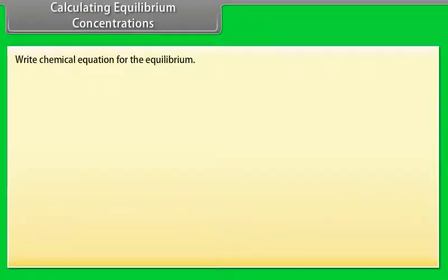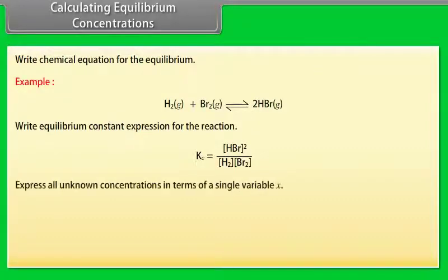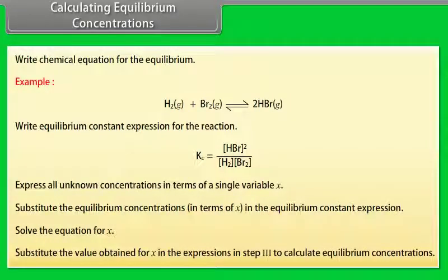Calculating equilibrium concentrations: (1) Write the chemical equation for the equilibrium. (2) Write the equilibrium constant expression for the reaction. (3) Express all unknown concentrations in terms of a single variable X. (4) Substitute the equilibrium concentrations in terms of X into the equilibrium constant expression. (5) Solve the equation for X. (6) Substitute the value of X back into the expressions from step 3 to calculate equilibrium concentrations.